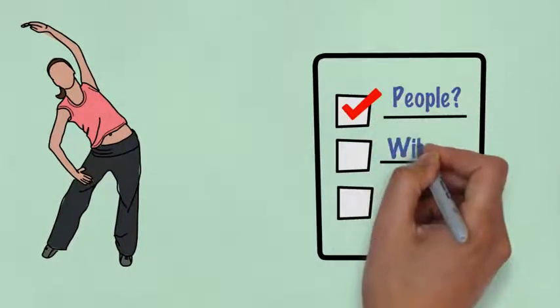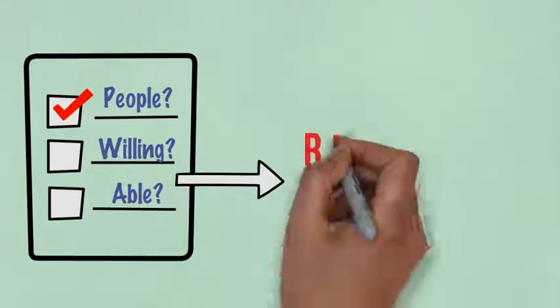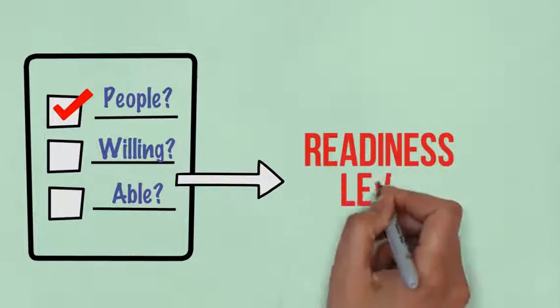Once you've prioritized the tasks to be completed, you should consider the willingness and ability of the people in your team to complete them. This can be described as their readiness level.